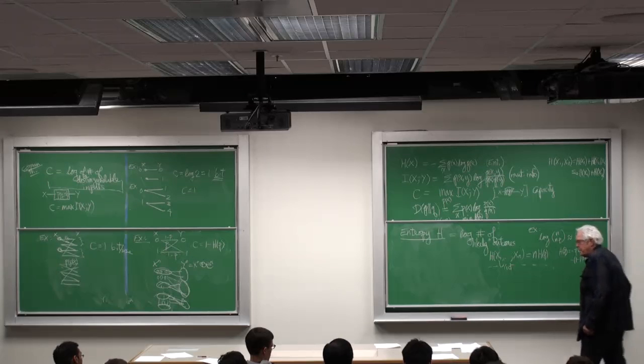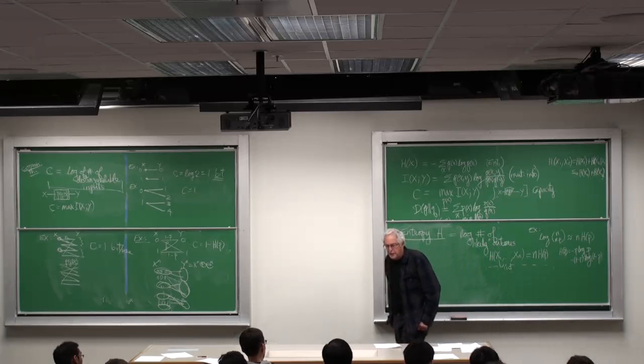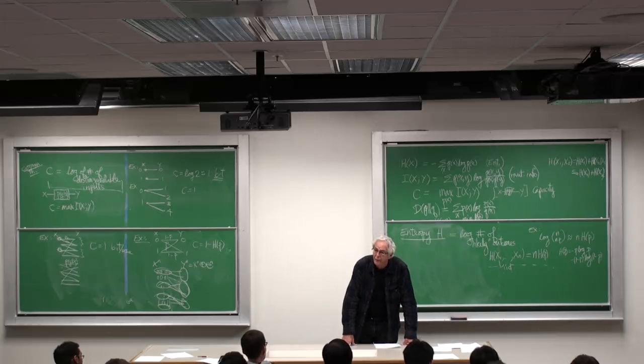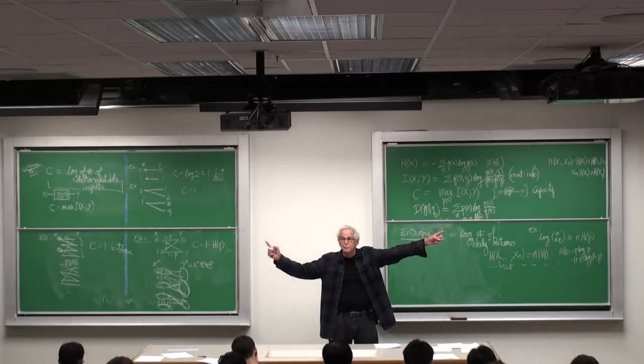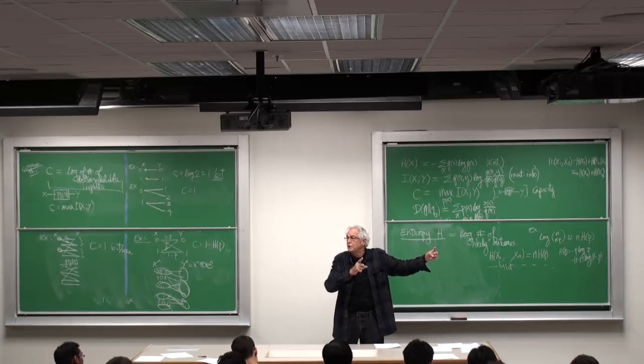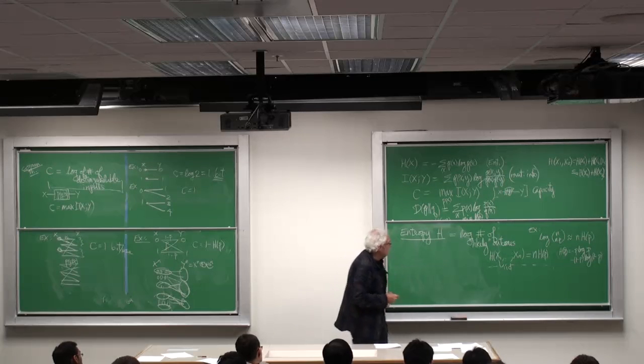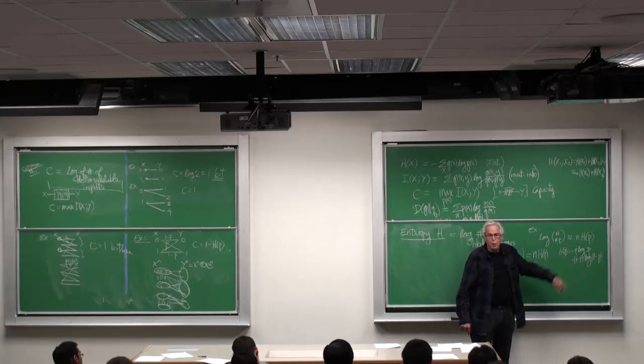And I chose P equals 0.1 because H of P, H of 0.1 is a half. And so that allows you to take a million bits of coin flips and compress them to 500,000 bits, if indeed the coin flips have parameter P equals 0.1.